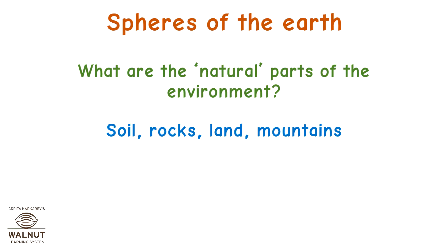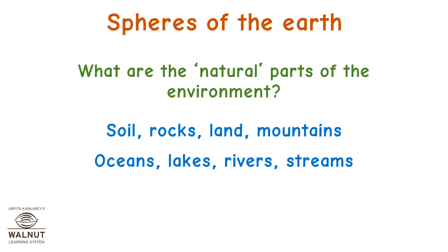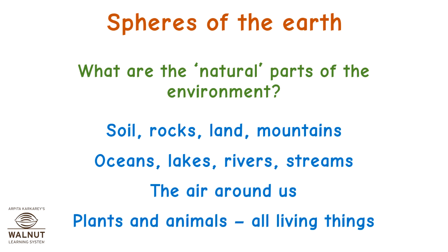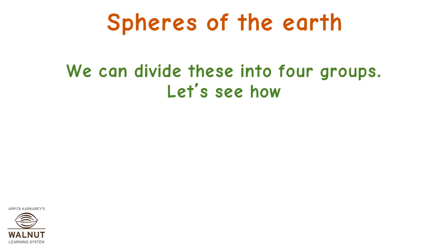Soil, rocks, land, mountains, oceans, lakes, rivers, streams, the air around us, plants and animals — all living things. We can divide these into four groups. Let's see how.